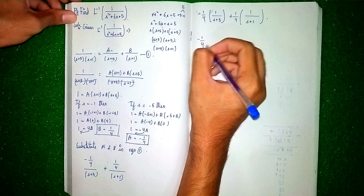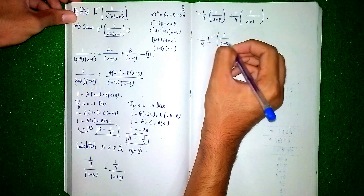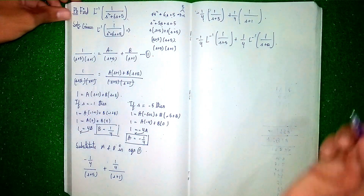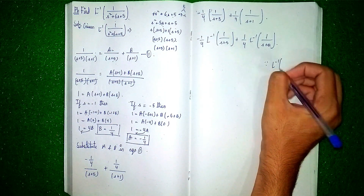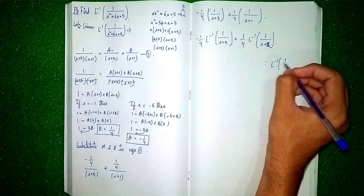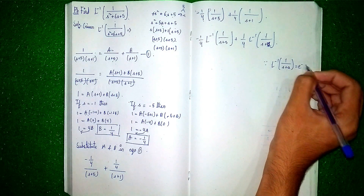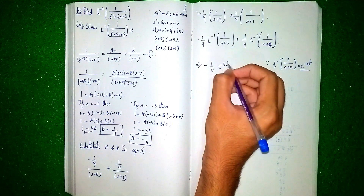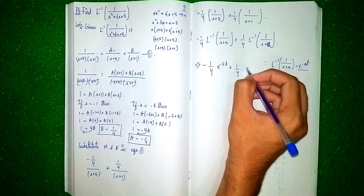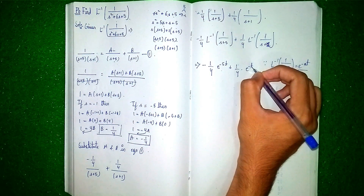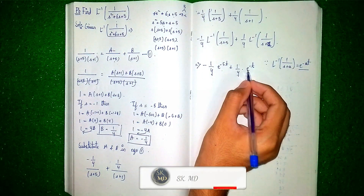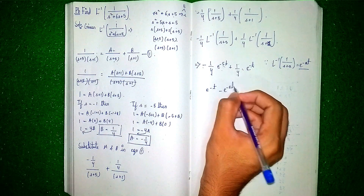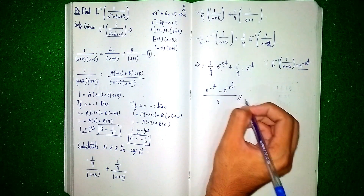Now apply the Laplace inverse. Using the formula: Laplace inverse of 1/(s + a) = e^(−at), we get: −(1/4) · e^(−5t) + (1/4) · e^(−t). Taking 1/4 as common factor, the final answer is (1/4)[e^(−t) − e^(−5t)]. Thanks for watching.